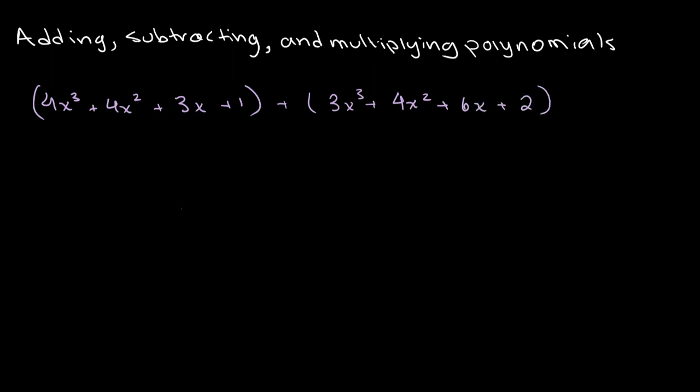Now what we want to do when we're adding polynomials is we want to match like terms. So for example, 4x cubed and 3x cubed are both like terms because the power of x in both cases is the same — it's 3. So what we do here is we add the coefficients: we take 4x cubed plus 3x cubed, which gives us 7x cubed.